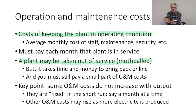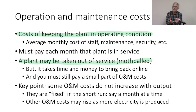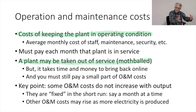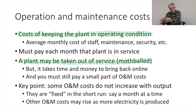Some operation and maintenance costs will actually get larger the more you run the plant. For example, the more you run a generator, the more maintenance you're going to have to do on it. If it's not running at all, you won't have to do much routine maintenance. If you're running it a lot, you'll have more routine maintenance to keep it running. So we have different types of O&M costs: some more or less fixed, some fixed only if you're running the plant, and some that vary as you run the plant more.